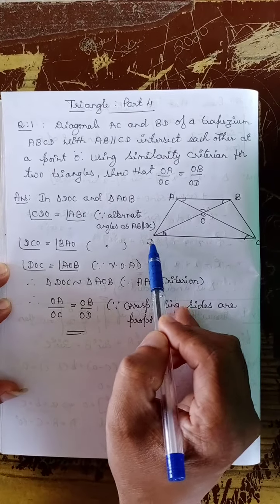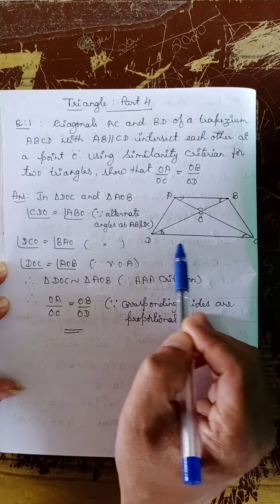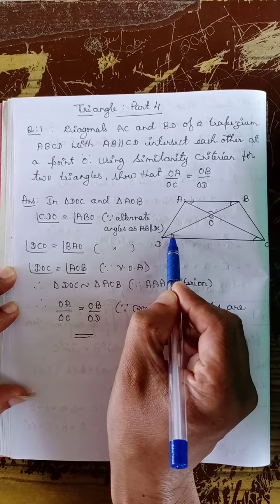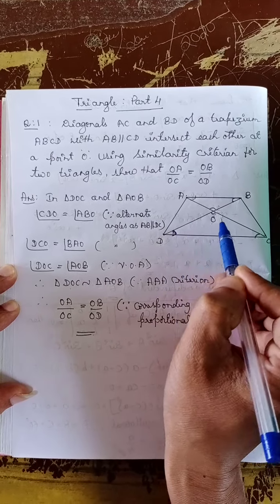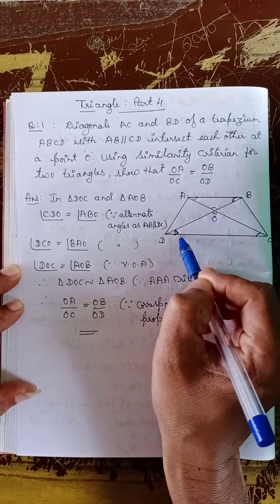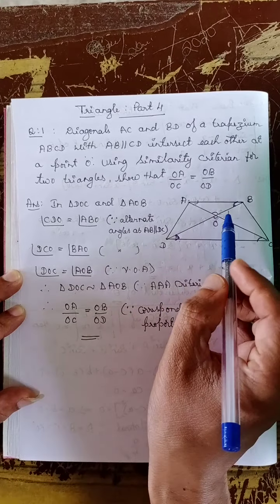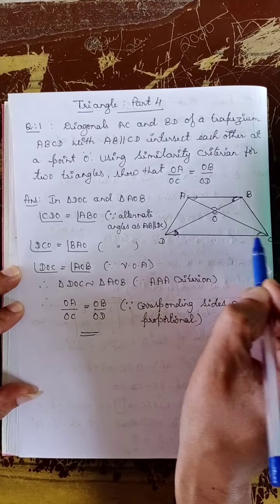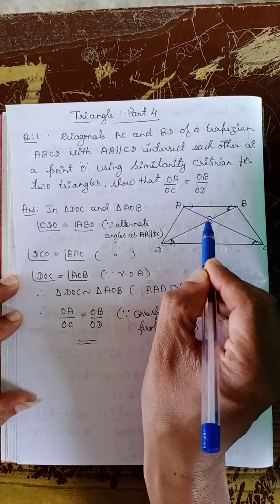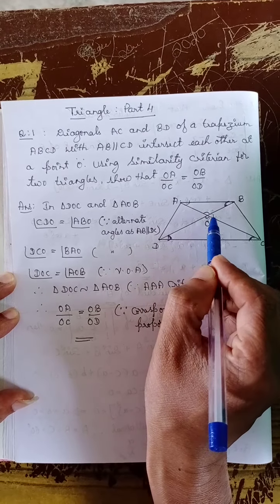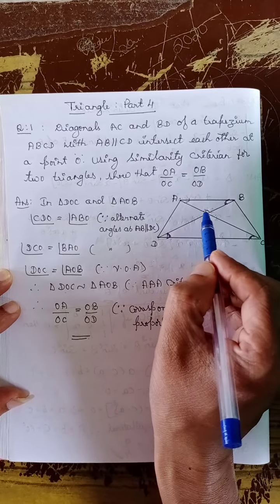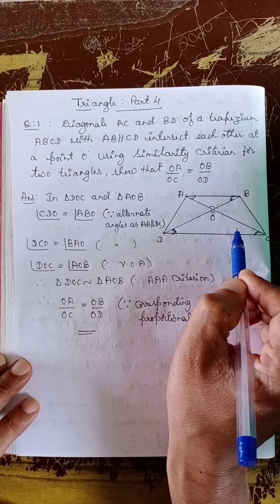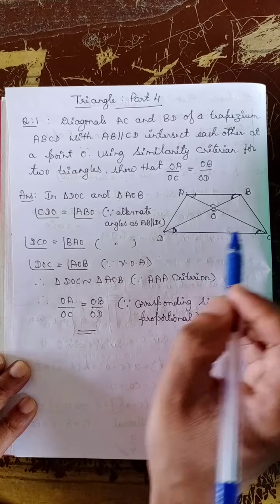Now see the answer. In triangle DOC and triangle AOB: angle CDO is equal to angle ABO. These two angles are equal since they are alternate angles, as AB is parallel to DC. Similarly, angle DCO is equal to angle OAB — these two angles are also alternate angles, as AB is parallel to DC.